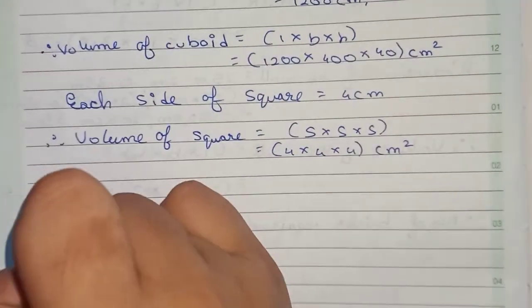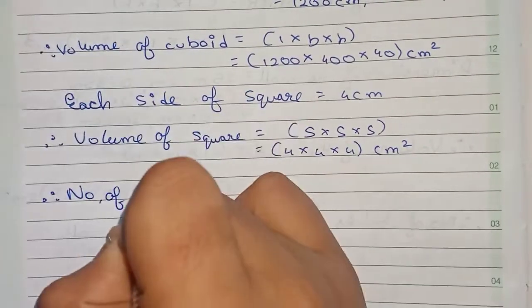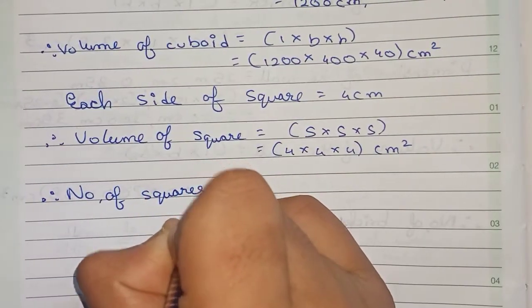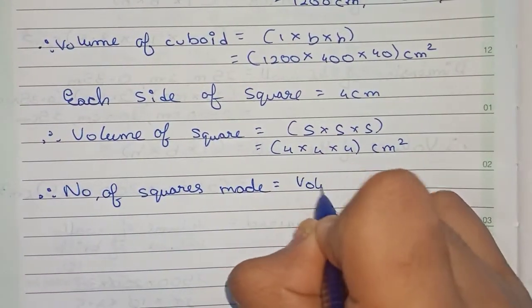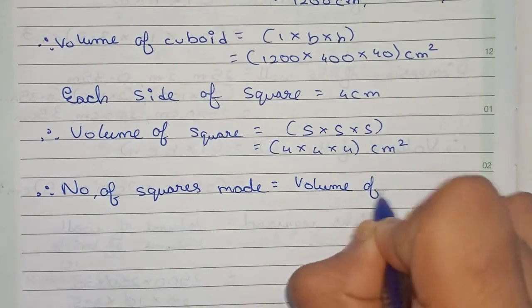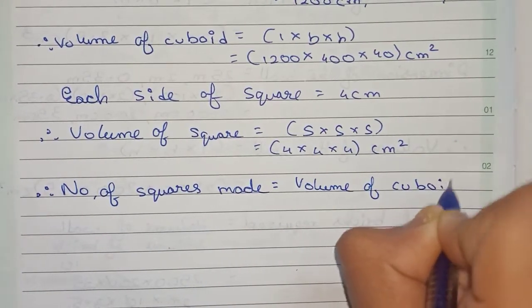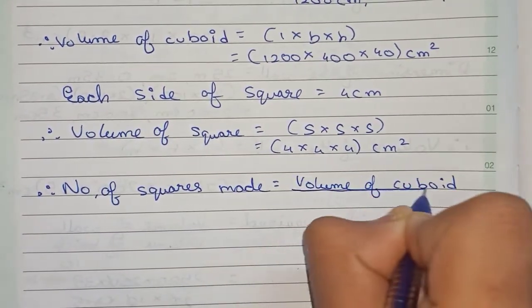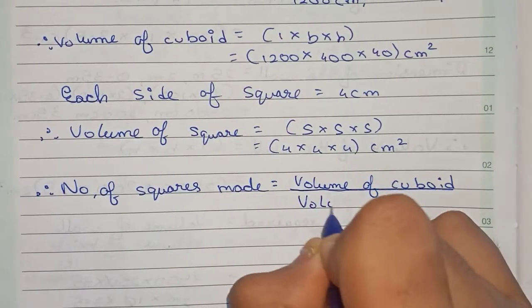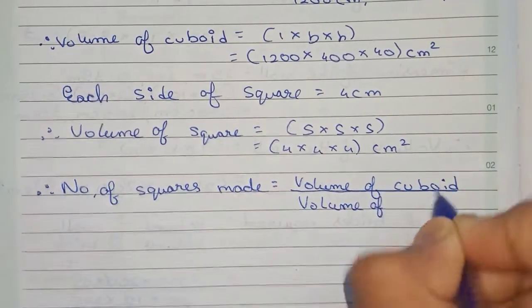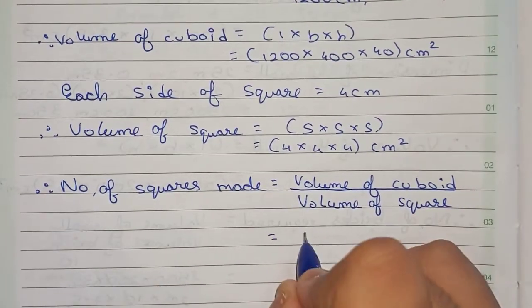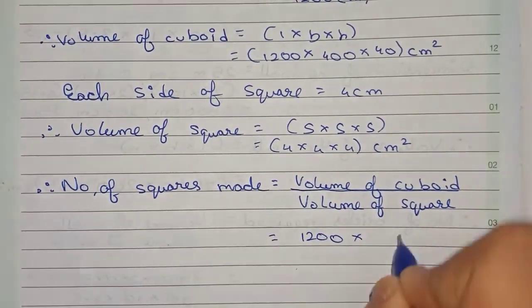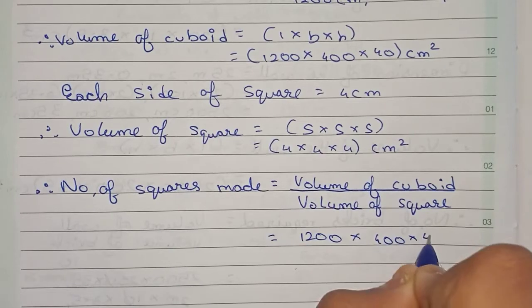So now I measure for number of squares made equals to, it will be volume of cuboid by the volume of cube, I mean the volume of the square. So which will equal to 1200 into 400 into 40 by 4 into 4 into 4.